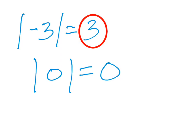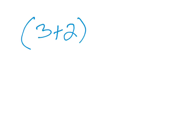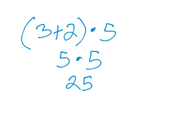The absolute value bars also act like a grouping symbol, just like parentheses. For example, if I have 3 plus 2 in parentheses and then multiply by 5, I do the grouping symbol first: 3 plus 2 gives 5 times 5, which equals 25. Similarly, I can use absolute value bars as a grouping symbol.